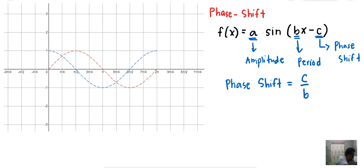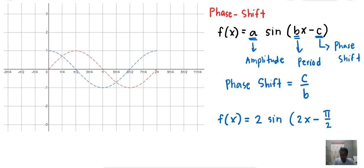Let us have an example. How do we graph f(x) = 2 sin(2x − π/2)? We have A = 2, which means the amplitude is 2 — the height of the wave will be 2, so the highest point is 2 and the lowest point is negative 2.